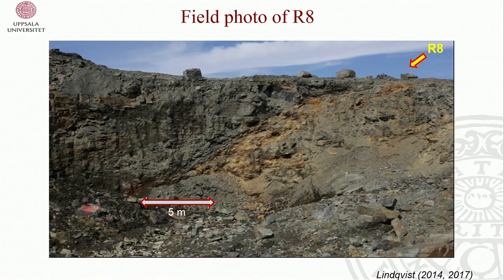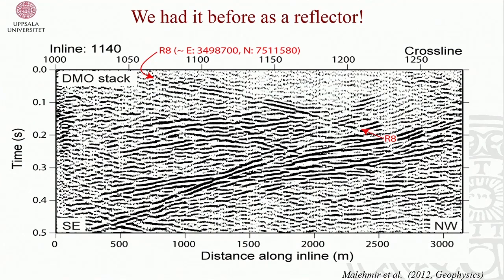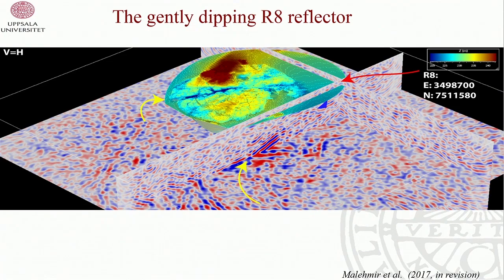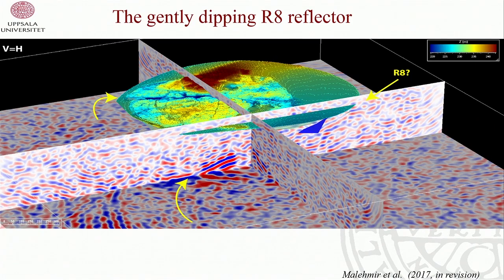We thought we had lost the R8 reflector in the shallow part, but could we recover it from the reflection data? We picked the point where it should come to the surface and went into the 3D seismic volume. Placing that point on the 3D seismic volume, you can see the R8 reflector. Looking at another view, the model shows a tail of the bedrock surface — it is actually the R8 structure — and you can see it going in continuation of these reflectors. We now have no doubt that R8 is a major fracture system intersecting the pit.